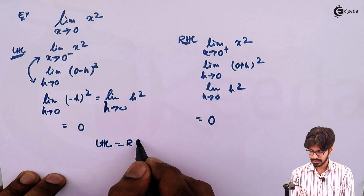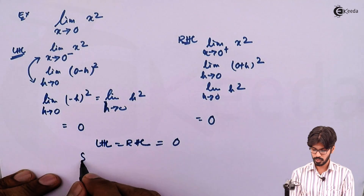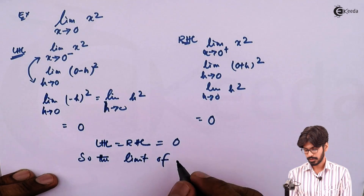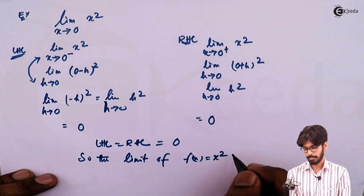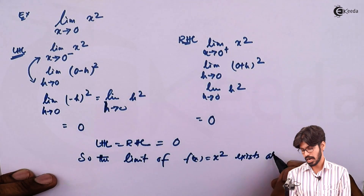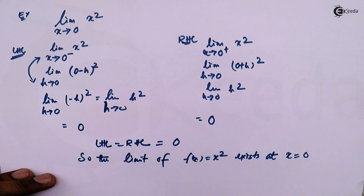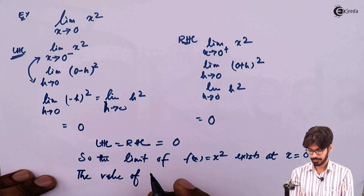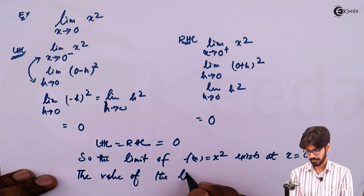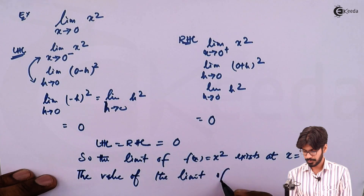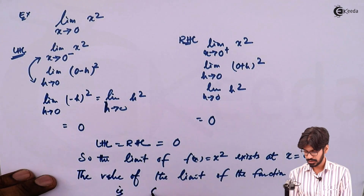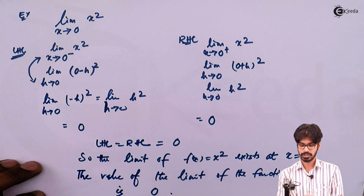Hence LHL equals RHL and that equals 0. So the limit of f of X equal to X squared exists at X equal to 0, and the value of the limit of the function f of X equal to X squared is 0. That is, l equals 0.